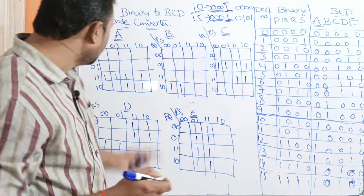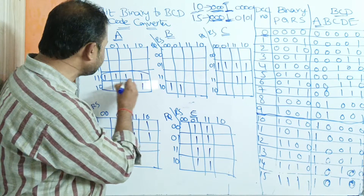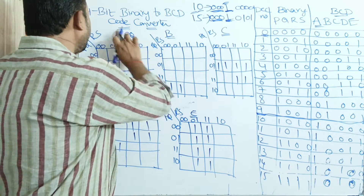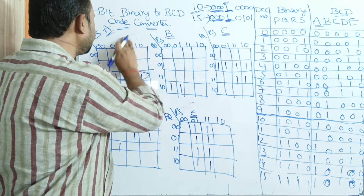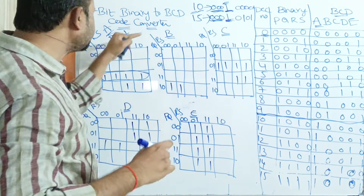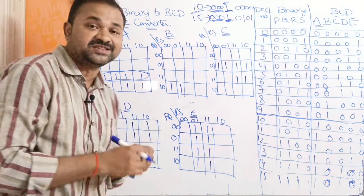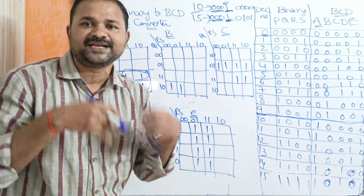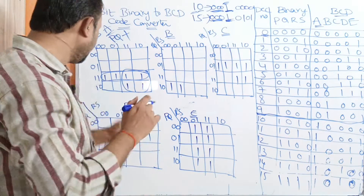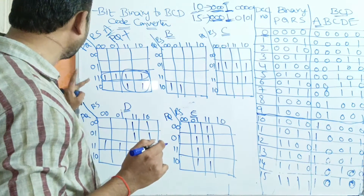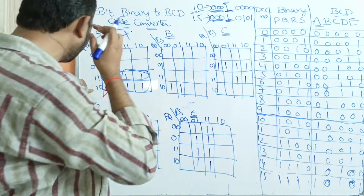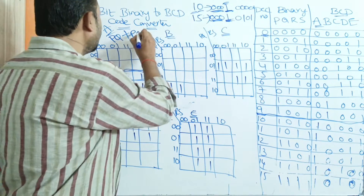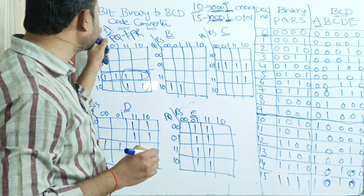Now we have to perform the mapping. If we observe A, we can make these 4 cells as one group. The minterm for this group is P=1, Q=1, meaning PQ. RS values are changing, so there is no need to consider them. Next, to cover the remaining 2 ones, it is better to make those 4 cells as one group — because more cells in a group means fewer literals. The common values are P=1, R=1, giving PR. So the simplified expression for A is PQ + PR.